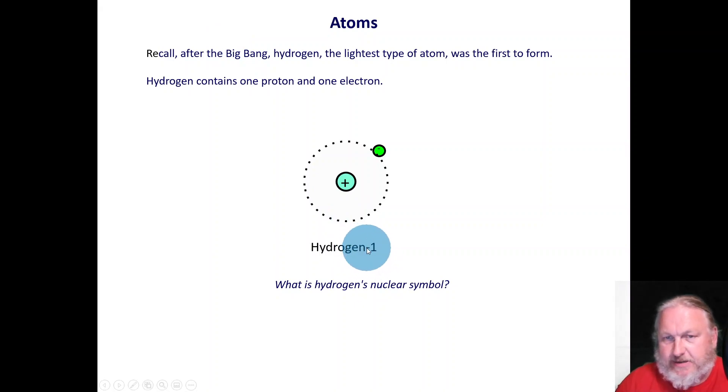that means it has a mass, an atomic mass of one. The one down below means that it has one proton. So what does that tell us? That it's got one proton and an electron. That's it.